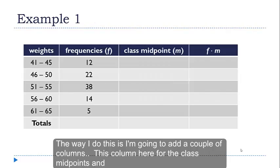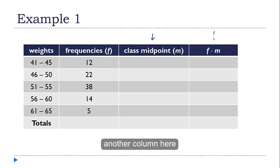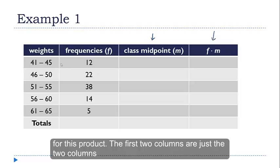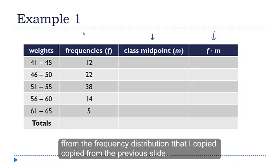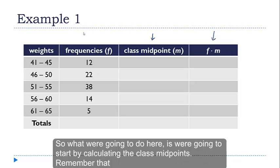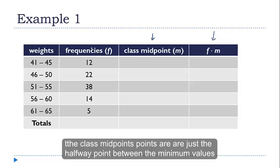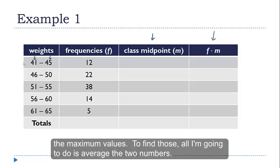The way I do this is I'm going to add a couple of columns. This column here for the class midpoints, and another column here for this product. And the first two columns are just the two columns with the frequency distribution. So what we're going to do here is we're going to start by calculating the class midpoints. And you remember the class midpoints are just the halfway point between the minimum values and the maximum values. And to find those, all I'm going to do is average those two numbers.